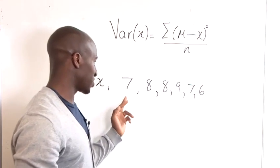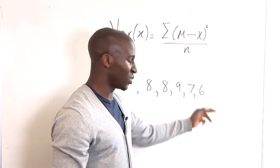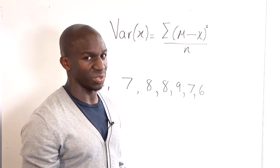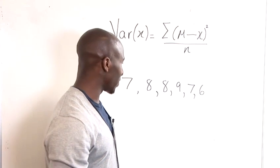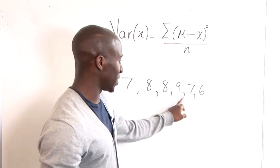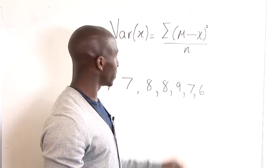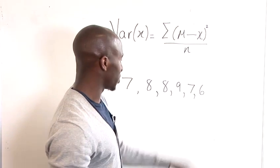Now just imagine if these were your measurements for heights of, say, children in a particular classroom. Now the next thing you would want to do is sum these so you can obtain the expected value, which is your μ.